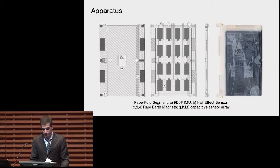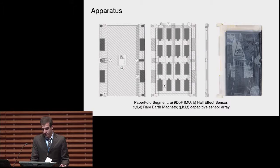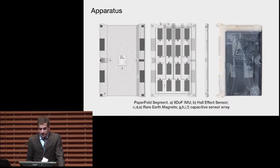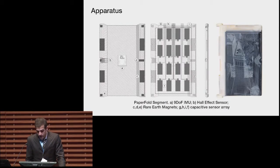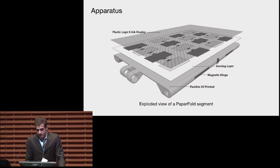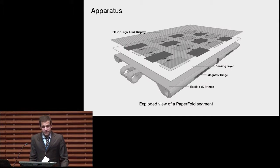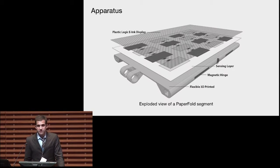I'll now describe the design of our prototype. The apparatus of the system was published at CHI last year, but to give you an overview, PaperFold is a foldable thin film device in which each tile has a flexible ink display attached to it, and a flexible 3D-printed substrate with embedded sensors that allow the system to determine the orientation and connection of each individual segment. Each segment measures 15 by 10 centimeters with a thickness of 1.25 millimeters. The increased thickness at the extremities is only a function of the required size of the magnetic hinges that allow PaperFold tiles to be attached in a variety of configurations.